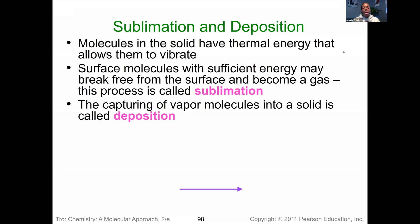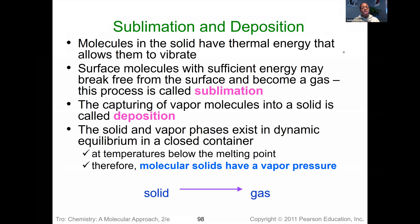Other processes include sublimation and deposition. Sublimation occurs when we have enough energy to take a solid directly to a gas phase — dry ice, which is solid carbon dioxide, starts to sublime immediately at room temperature, creating that vapor. Going directly from a gas to a solid is the process known as deposition. The sublimation process is endothermic — energy comes in — and for deposition we need energy leaving, so it's exothermic.